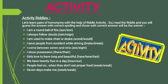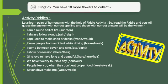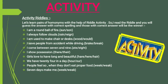Next riddle: We have 24 of me in a day. Answer is H-O-U-R — hour, kante — we have 24 hours in a day. Next riddle: People feel this way when they don't eat proper food. Options are W-E-E-K — week meaning days of a week — or W-E-A-K — weak meaning kamzor. Answer is W-E-A-K — weak. And another riddle: Seven days make me — that is W-E-E-K, week.